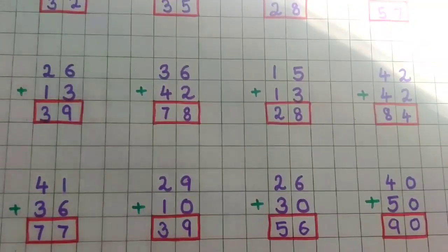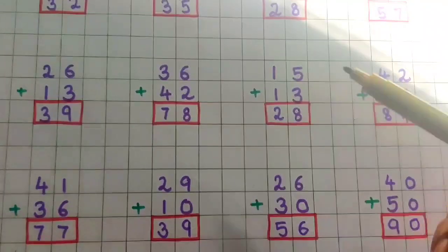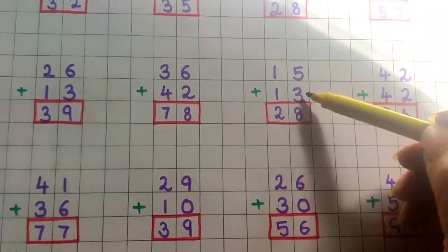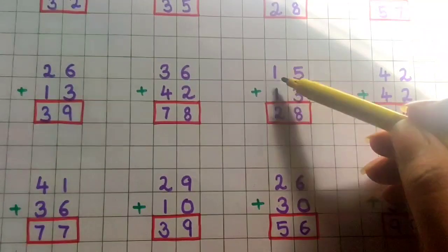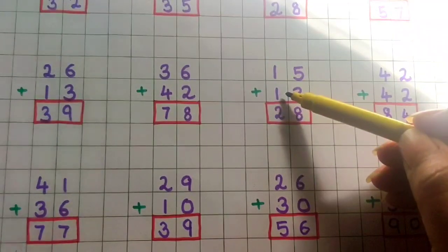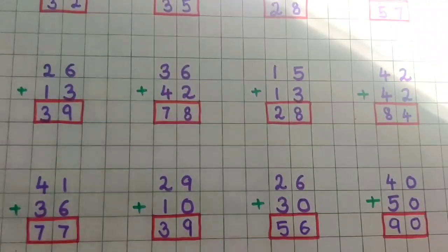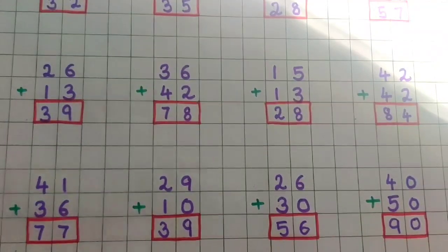Okay children, I hope the double digit addition is clear to you. First we will do the addition of the numbers present in the ones place, and then we will do the addition of the numbers present in the tens place. If you enjoyed this video children, do give it a like, share this video, and subscribe to our channel. Bye bye!